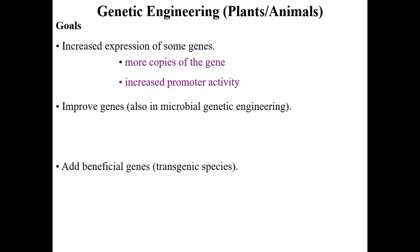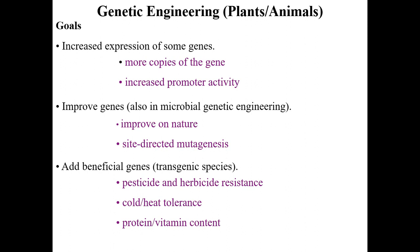We can insert a different or improved version of a gene and reinsert it back into the plant. We can also add beneficial genes from other species, creating transgenic species. This has been done extensively in plants — introducing genes allowing resistance to pesticides or herbicides sprayed on crops, cold resistance, heat resistance, bumping up protein content, or vitamin content like vitamin A.